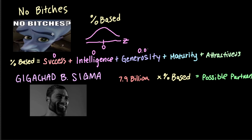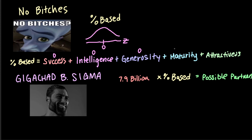Perhaps I will give you a 0.000... actually, I must have been getting carried away with my generosity there. Let's not discuss this any further. Maturity value — we know you are all weebs, which means unfortunately you have absolutely zero maturity, so we have to put a value of zero. And in terms of attractiveness, the average person is an absolute zero. So when we have all of these combined, we have the SIGMA — zero plus zero plus zero plus zero plus zero. Everything is equal to zero. Your percent-based will be a value of zero.